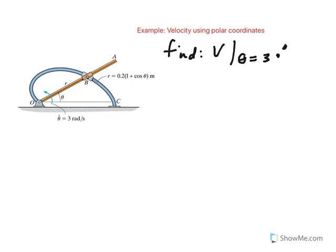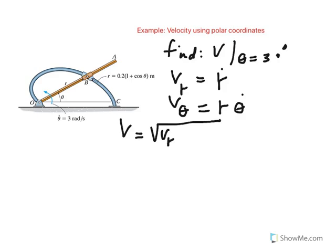In polar coordinate system, velocity has two components. One component is V sub r, which is r dot, and the other component is V sub theta, which is r theta dot. Once we have V sub r and V sub theta, the magnitude of velocity would be the resultant of the two components, so that would be square root of V sub r squared plus V sub theta squared.